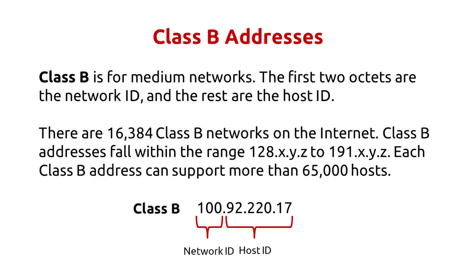Class B is for medium networks. The first two octets are the network ID and the rest are the host ID. There are 16,384 Class B networks on the internet. Class B addresses fall within the range 128.x.y.z to 191.x.y.z. Each Class B address can support more than 65,000 hosts.